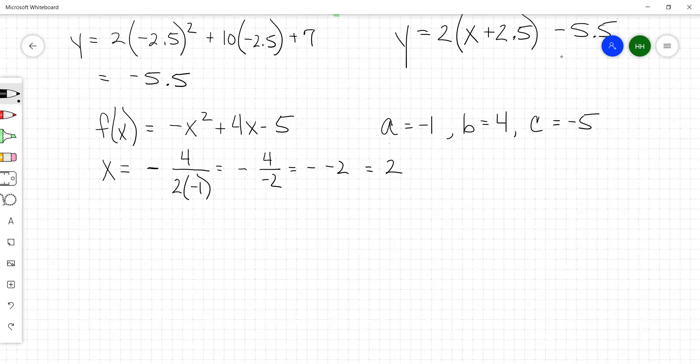So your x at the vertex is 2. Substitute to find your y at the vertex. Now, be careful here. This negative sign is the same as a negative 1 times x². This isn't negative 2 squared. This is the negative of or the opposite of or negative 1 times 2² plus 4 times 2 minus 5.